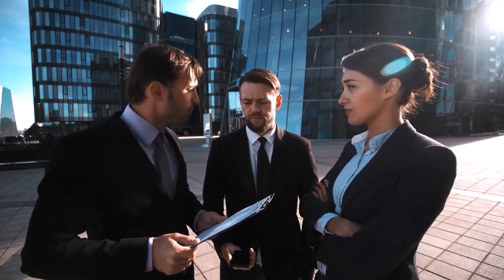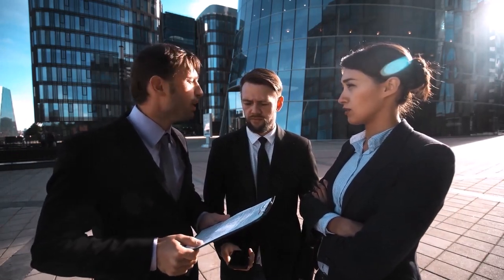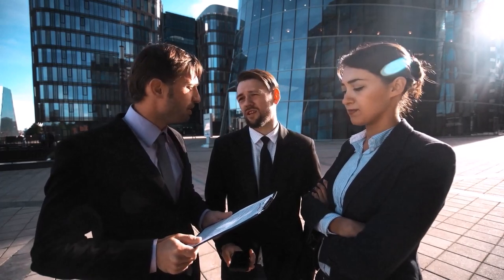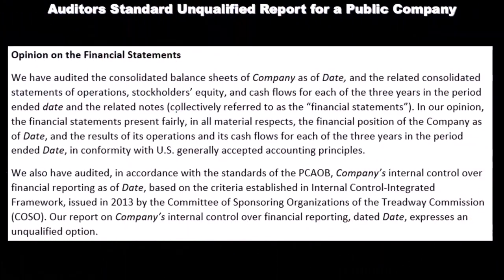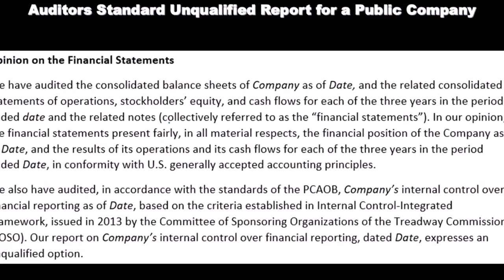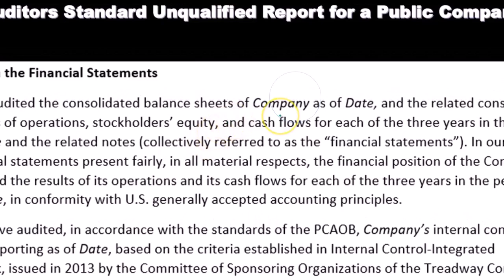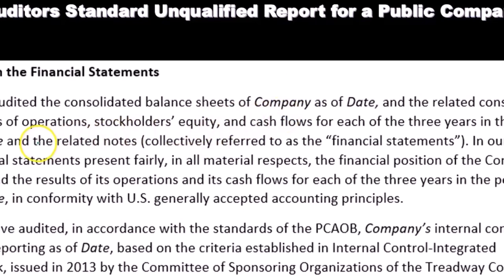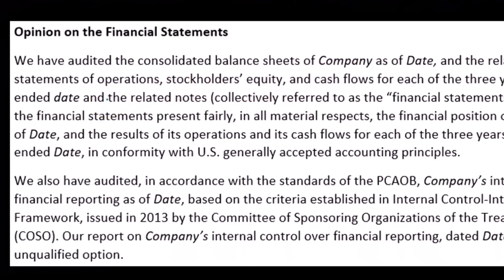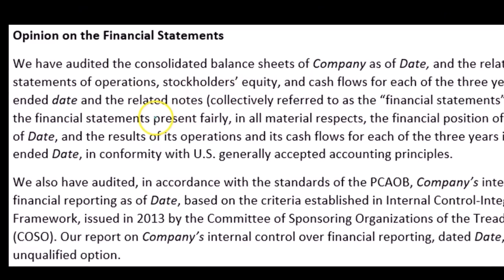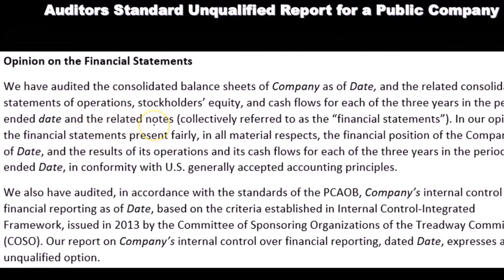Note what's happening here with the balance sheet: that's as of a point in time. The other statements — operations, stockholders equity, and cash flows — are all time-frame statements with a beginning and an end. That's why it's formatted this way: we have the balance sheet of the company and the related consolidated statements for each of the three years in the period ended at this date and related notes, collectively referred to as the financial statements.